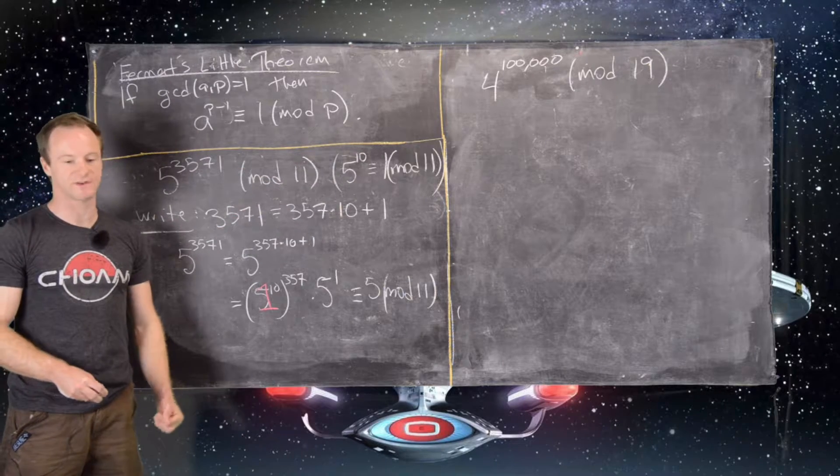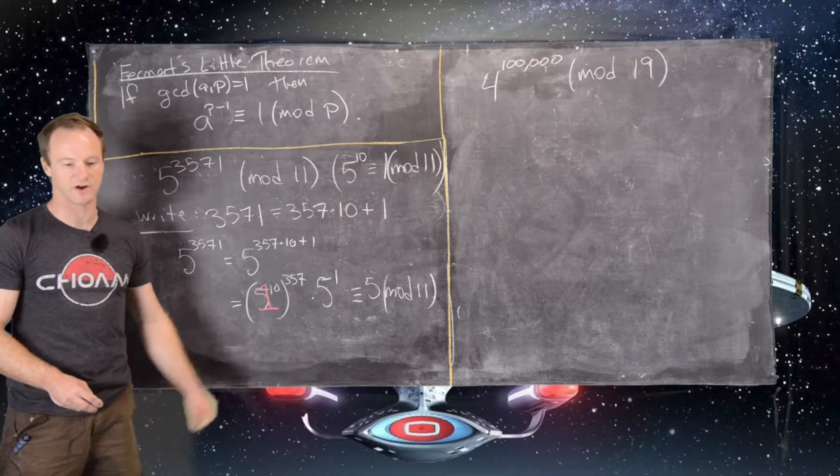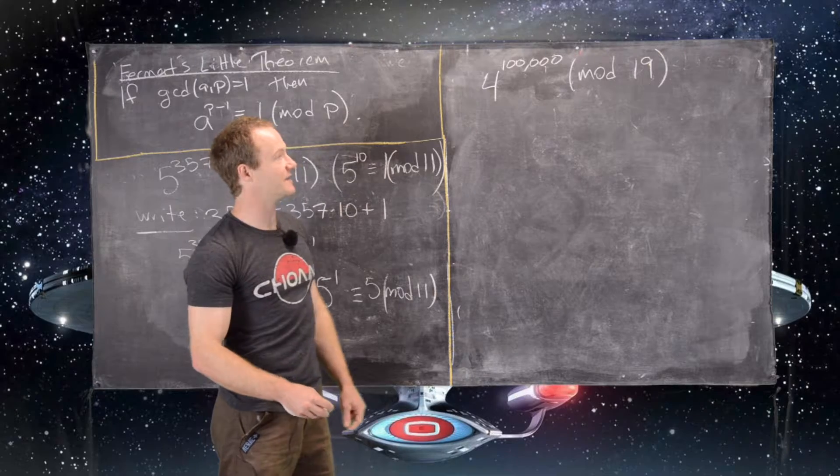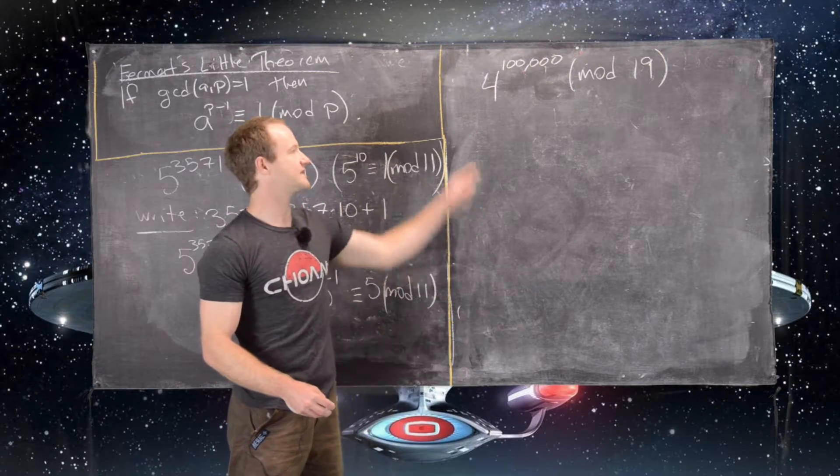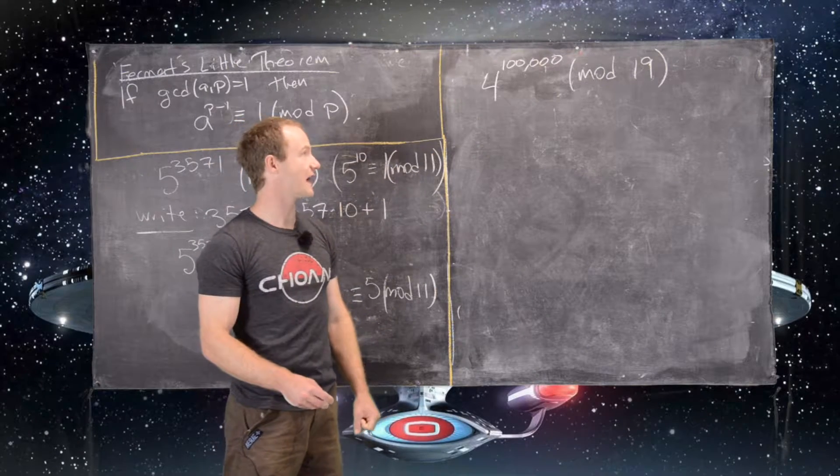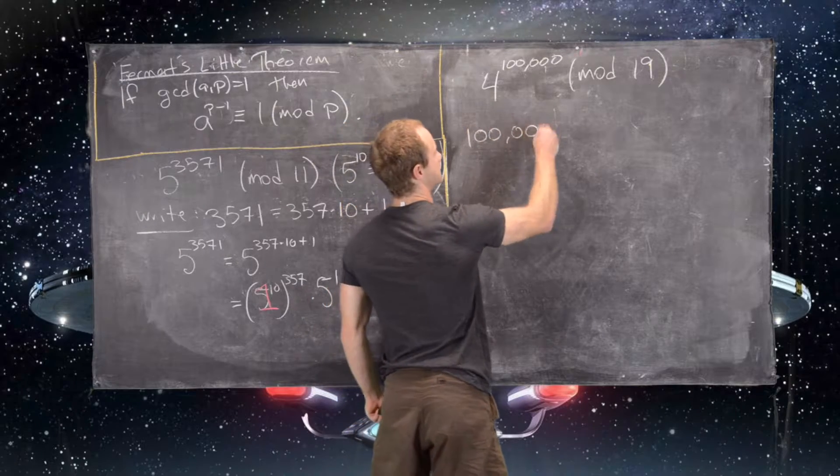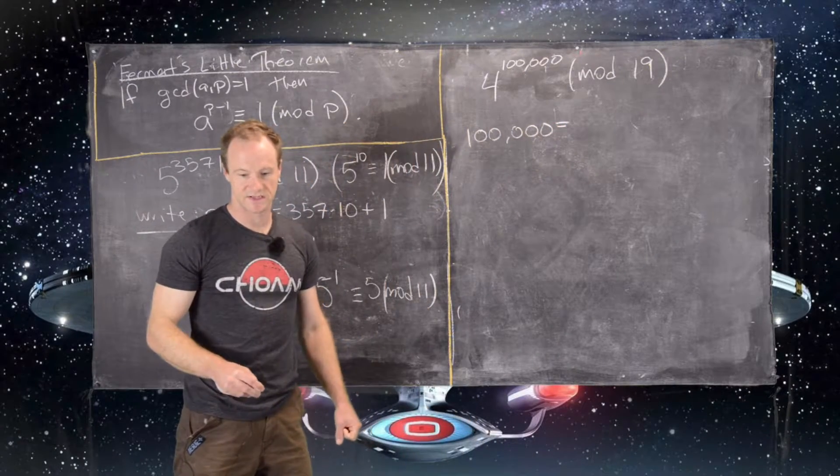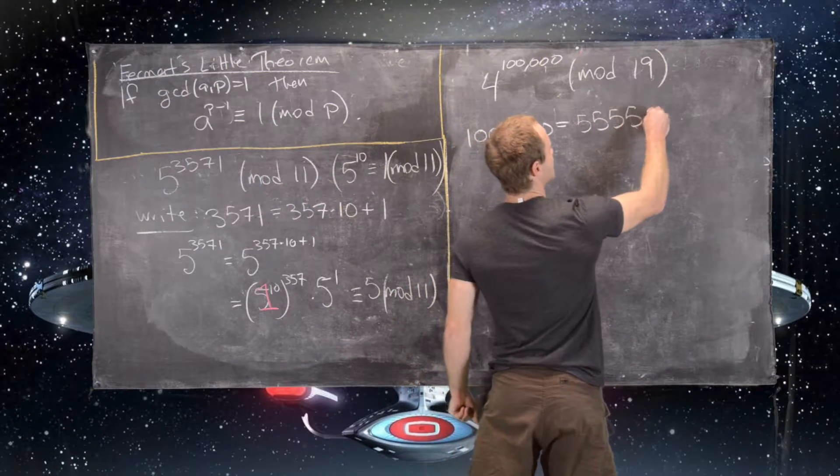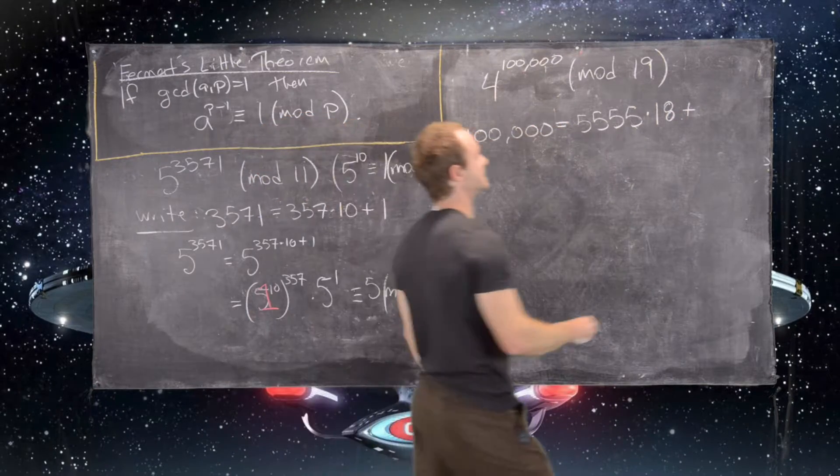So we'll use a similar strategy for this next example. The ending is just a little bit more complicated, but not very much. So again, we'll use the division algorithm with, in this case, 18, because 18 is 19 minus 1. Sorry, not with 4, but with 100,000 and 18. And what we can do is write 100,000 as 5,555 times 18 plus, so our remainder in this case is 10.